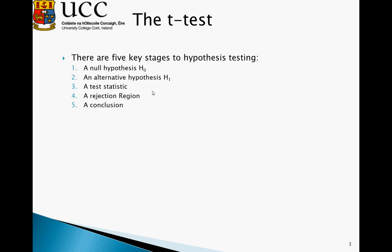Essentially there are five key stages to hypothesis testing. The first is to specify a null hypothesis, then we specify an alternative hypothesis. We then talk about the test statistic which we must calculate. We talk about how to calculate our rejection region which uses critical values from the t distribution table. And then we derive a conclusion, essentially whether we accept or do not accept the null hypothesis.